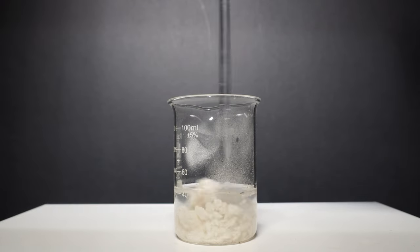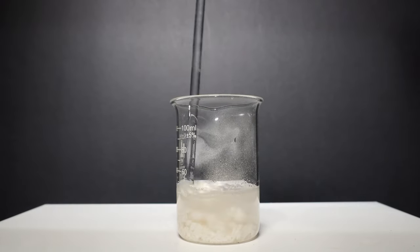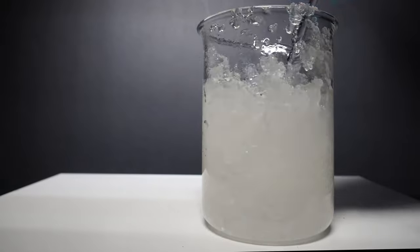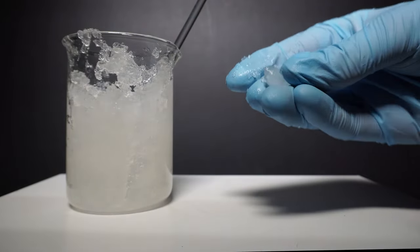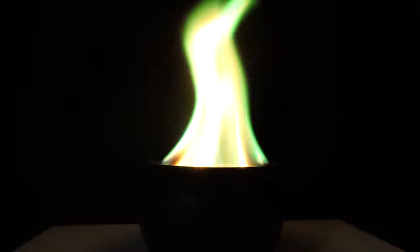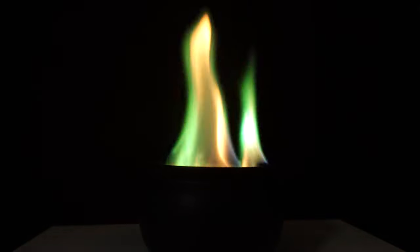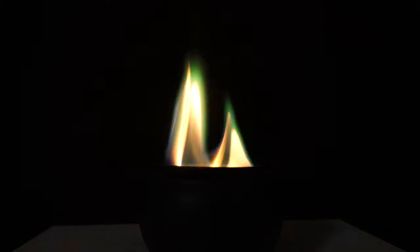In today's video I'm going to be taking some calcium acetate I made in the last video and turn it into some flammable jelly. I will then add additional compounds to make the fire burn different colors. I will also be announcing who won my last video at the end so make sure to stay tuned.